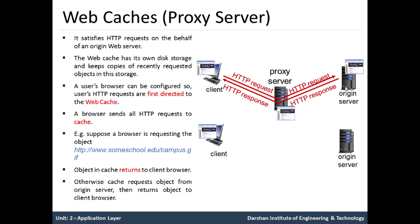Now, if a second client also wants to request the same object, they can send an HTTP request to the proxy server. Since the same object is stored locally, this request does not need to go to the origin server. Instead, the proxy server replies with the same object to the client directly.